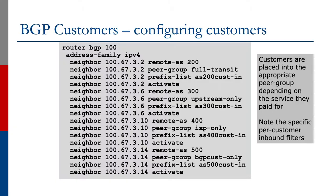When configuring customers, you have this sample configuration on the screen. For remote AS200 with customer 167.3.2, the peer group is set as full transit with a prefix list for the AS200 customer inbound, then you activate it. The next customer in remote AS300 is only interested in upstream-only and is inside the upstream-only peer group with a separate prefix list AS300-customer-in. AS400 is only interested in IXP routes and has their own prefix list for inbound. Each specific customer has a specific prefix list to properly filter what they're advertising to us — you should always know what your BGP speakers are advertising to you and filter accordingly.